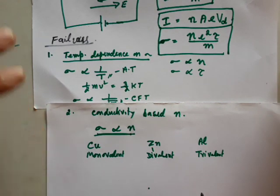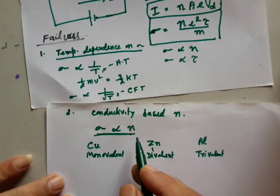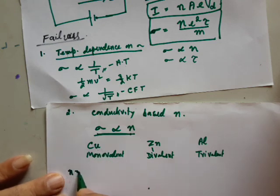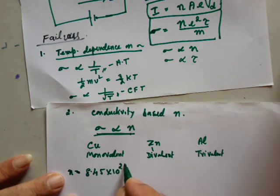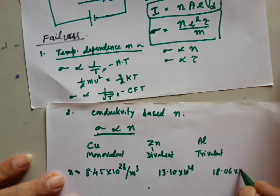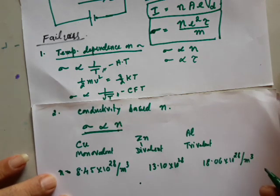Let us see whether conductivity is really proportional to n. With these examples, the total number of electrons per unit volume: in copper, it is 8.45 × 10²⁸ per meter cube. Zinc has around 13.10 × 10²⁸ — more electrons because it is divalent. And aluminum has around 18.06 × 10²⁸ electrons per meter cube.